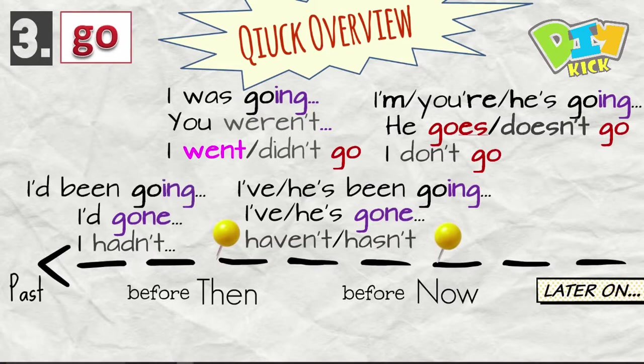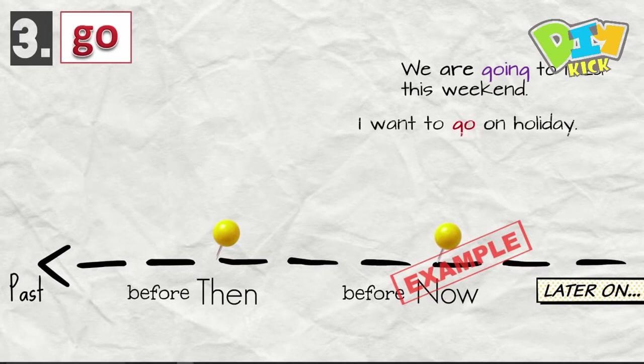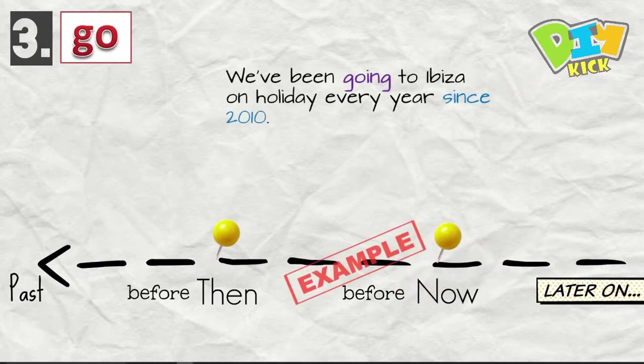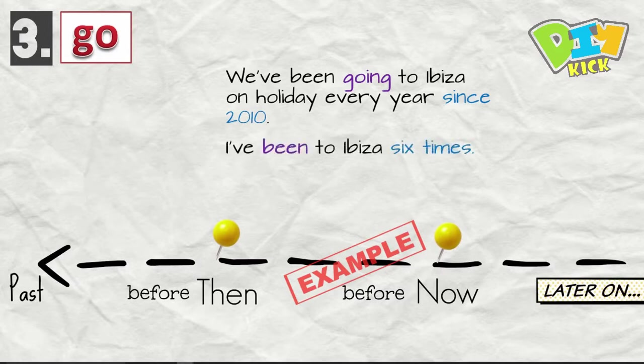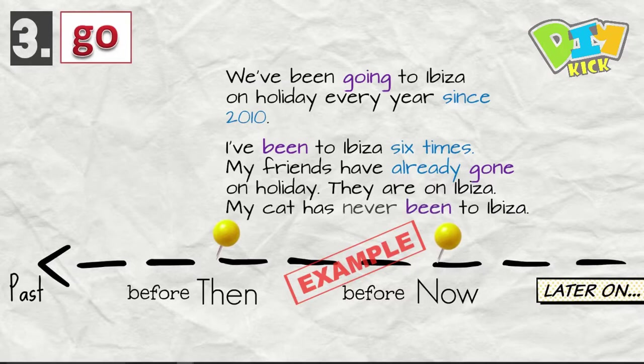So let's have a look at the examples again. We are going to Ibiza this weekend. I want to go on holiday. I don't often go on holiday. My cat never goes on holiday. We've been going to Ibiza on holiday every year since 2010. I've been to Ibiza six times. My friends have already gone on holiday. They are on Ibiza. My cat has never been to Ibiza.